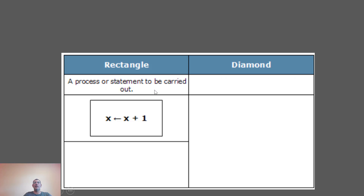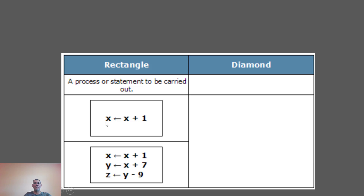We use rectangles for processes and statements to be executed. For example, incrementing X — X could be a counter or a value of time — so X plus 1 is an increment. If X was 9, the new value would be 10. For multiple processes: first we increment X, second we add 7 to X and store that into Y, so if X was 3, then Y becomes 10.